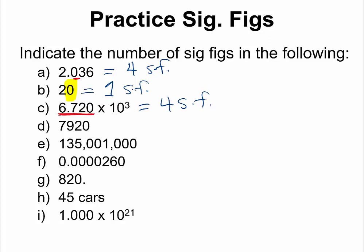For question D, we have a trailing zero here that is not followed by a decimal, so this would be considered a three significant figure number. For question E, we have different types of zeros here. The two zeros that are sandwiched between non-zero numbers are considered significant. But we have trailing zeros that are not followed by a decimal and do not follow after a decimal, so they are considered non-significant, which means this number would end up as six significant figures.